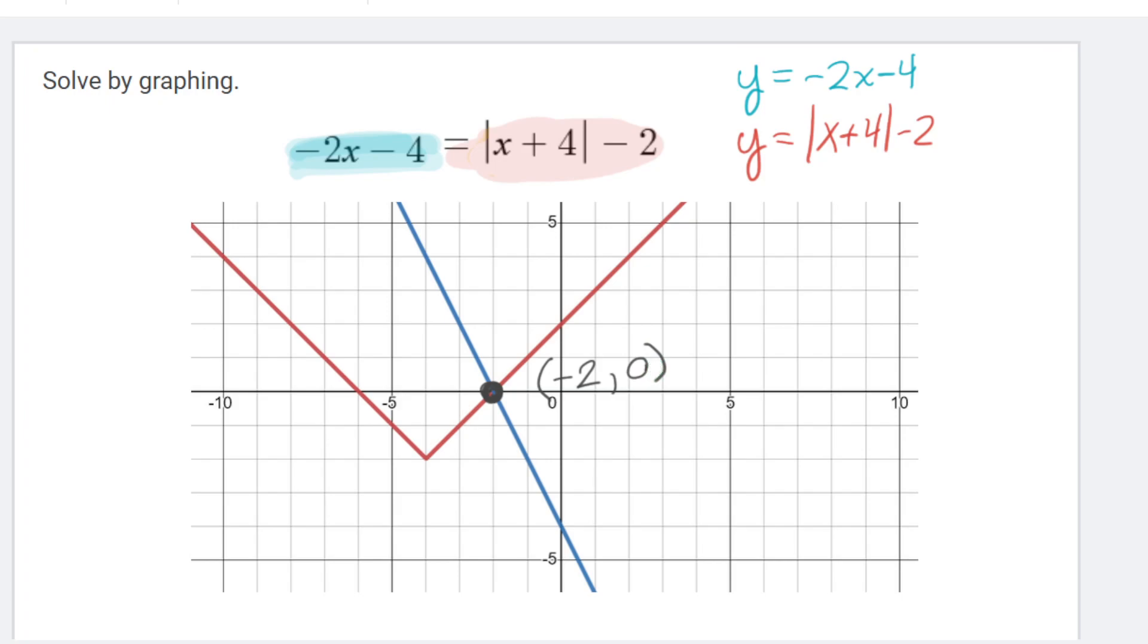Now, the thing is, this equation doesn't have any y values in it. So this y is really pretty unnecessary. The only part I actually care about is the x value. So my solution to the equation is x equals negative 2. I'm not saying it's the ordered pair, I'm saying it's that x value.